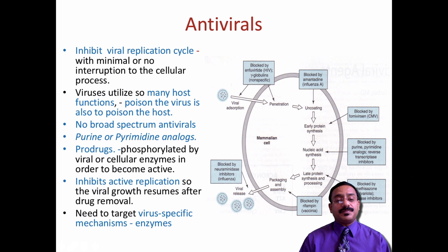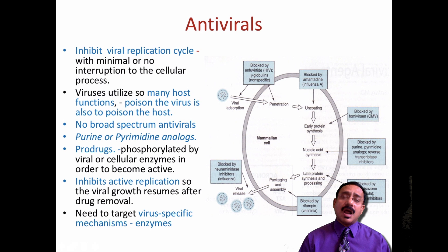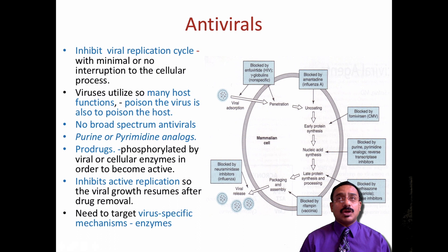The prodrug concept: this drug gets phosphorylated and then its function happens. This phosphorylation happens only in the presence of viral or cellular enzymes in order to become active — a very protective mechanism where cells not infected with viruses are protected. Next is inhibition of active replication so that viral growth resumes after the drug is removed. Because of the purine and pyrimidine analogs replacing the original A, T, G, C, when viruses try to replicate, they can't.